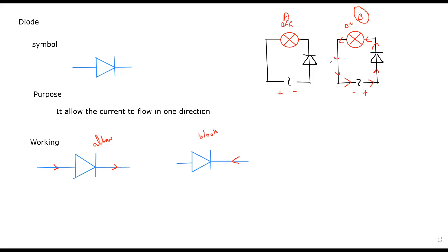The purpose of the diode: if you want to convert alternating current to direct current, or make the current move in one direction, the resulting current is known as DC. For that purpose we use a diode.